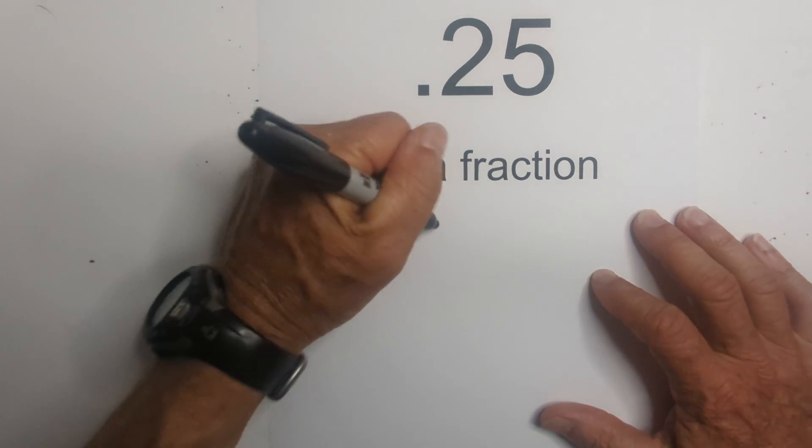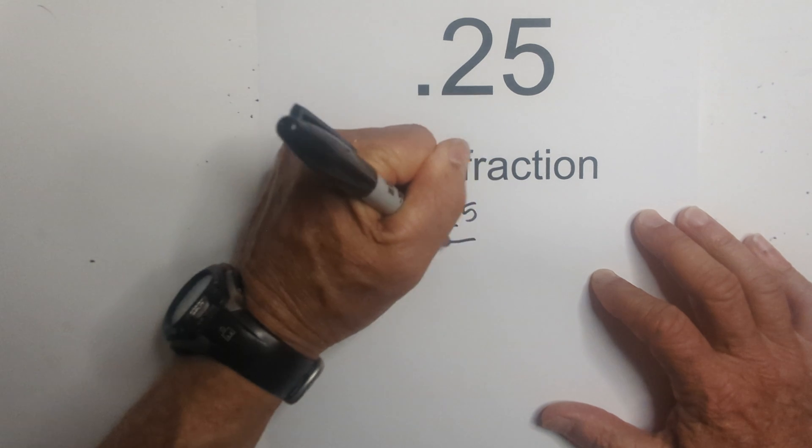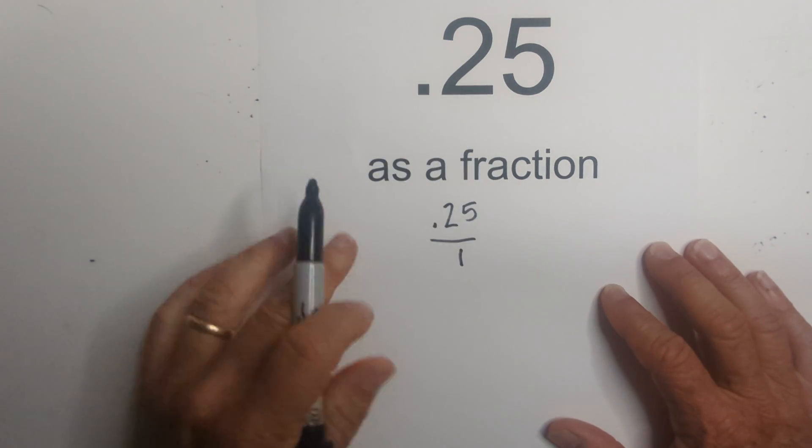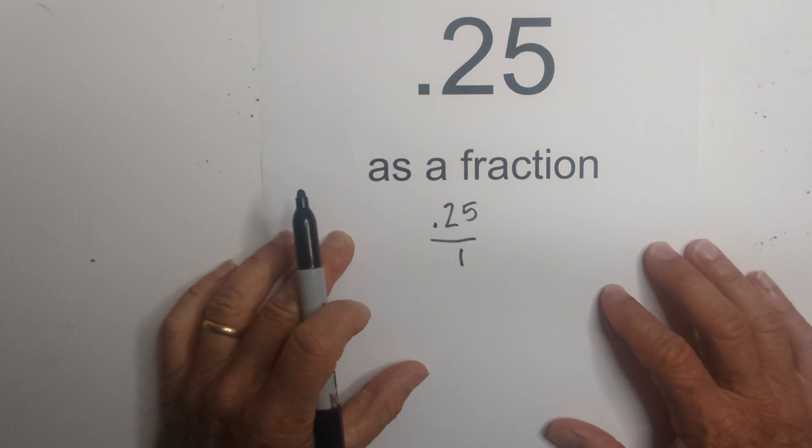Okay, step one is I'm going to place 25 hundredths over one. Step two, I need to convert this, the 25 hundredths, to a whole number.